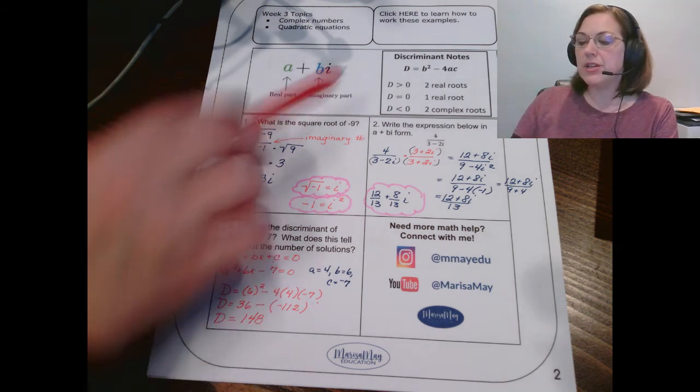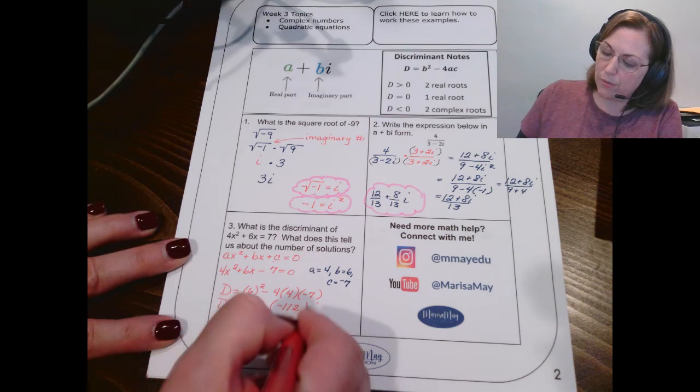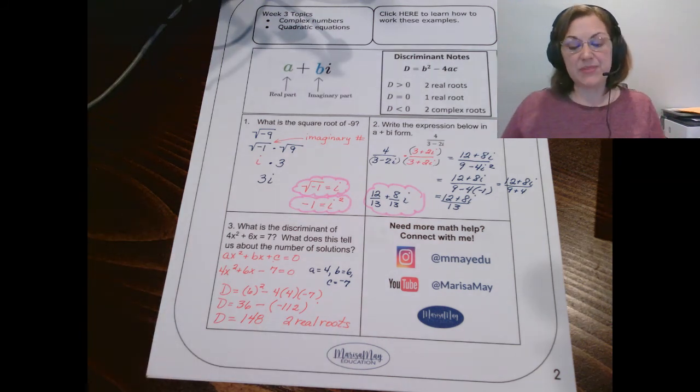Positive 148. So, look at your notes. If the discriminant is positive, there are two real roots. And that's what that tells us.